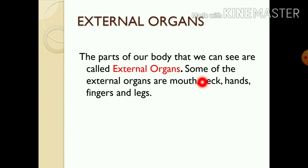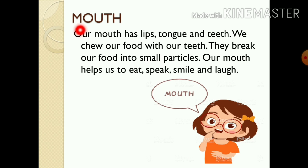Some of the external organs are mouth, neck, hands, fingers, and legs. The number one is mouth. Our mouth has lips, tongue, and teeth.